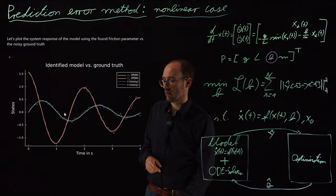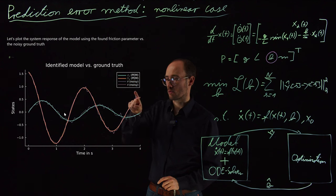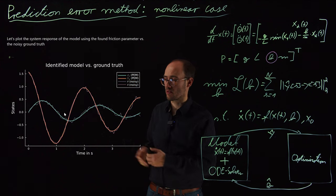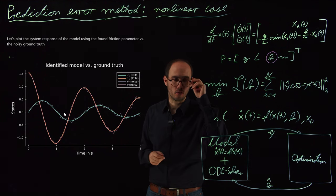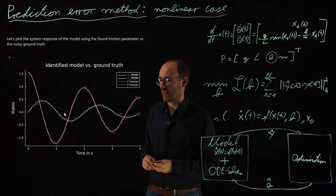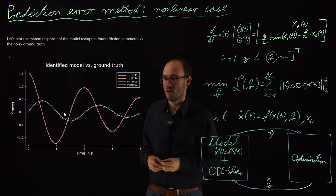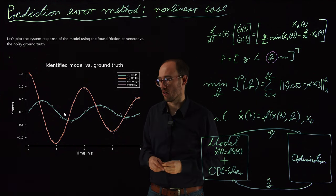When we then compare the PEM solution, so the predicted states using the PEM identified model and the ground truth noisy data, we can also see that more or less in the previous plot where we have generated the noisy measurement, the artificial data that this is perfectly laying over each other, which is no big surprise because the parameter B could be found ideally.